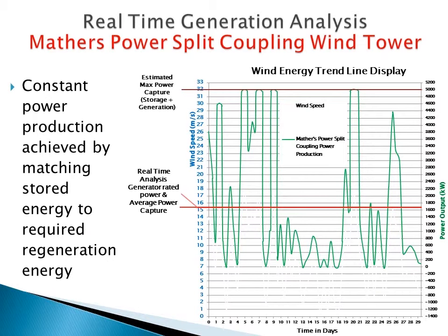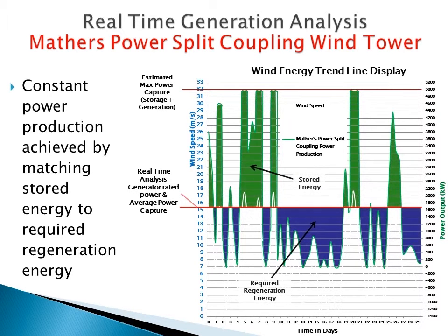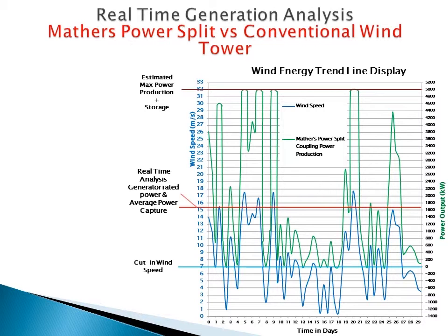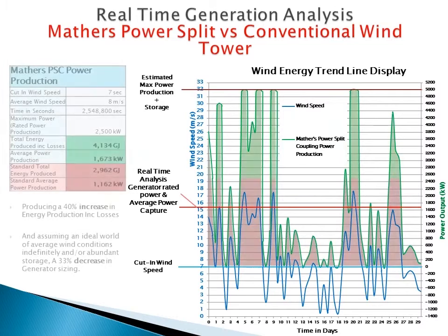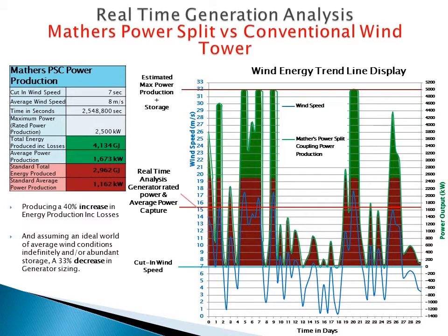By using the Mathers PSC and a large-scale energy storage system, it is possible to run the tower's generator at a constant output regardless of wind speed. This animation illustrates that, provided the stored energy shown in green matches the required regeneration shown in blue, the generator could theoretically run indefinitely at its average power production of roughly 1,700 kW. Shown in red is the total energy from a conventional wind tower, while the red plus green area is the energy obtainable from the PSC and regeneration system, concluding that use of a Mathers power split coupling and regeneration system provided almost a 40% increase in power production including losses, and ideologically a 30% decrease in required generator sizing.